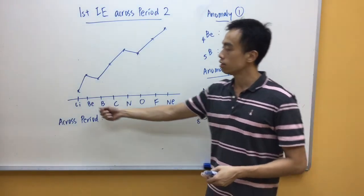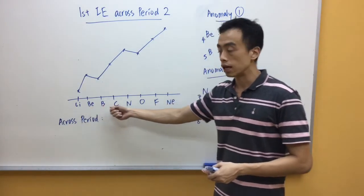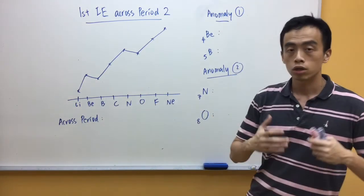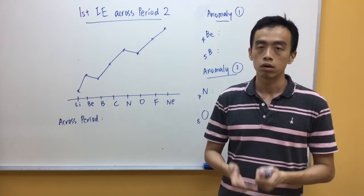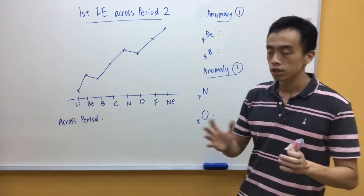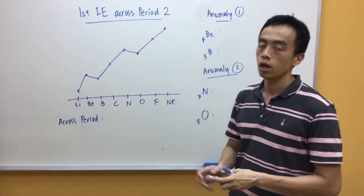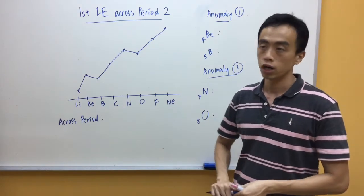Now, what you'll notice is in this case, there's a general increase in the first ionization energy across period 2. So, the concept that you use to explain this increase in ionization energy will be effective nuclear charge. Basically, it is quite simple for us to explain using effective nuclear charge.